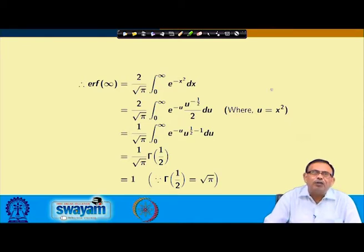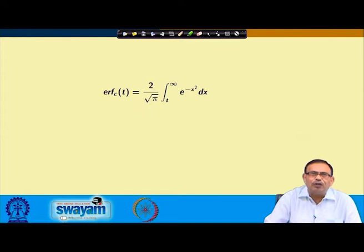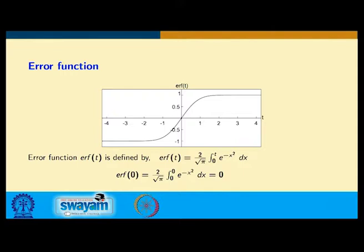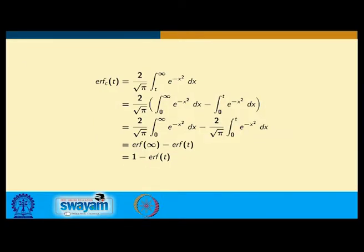There is another function called the complementary error function. The erf function is (2/√π) ∫₀ᵗ e^(−x²) dx, and the complementary error function erfc(t) is defined as (2/√π) ∫ₜ^∞ e^(−x²) dx. I can write this by splitting: (2/√π)[∫₀^∞ e^(−x²) dx − ∫₀ᵗ e^(−x²) dx].